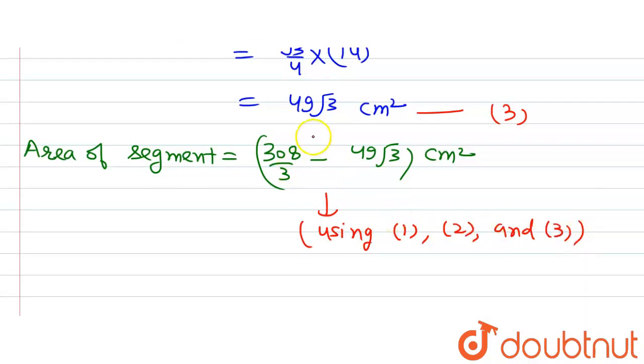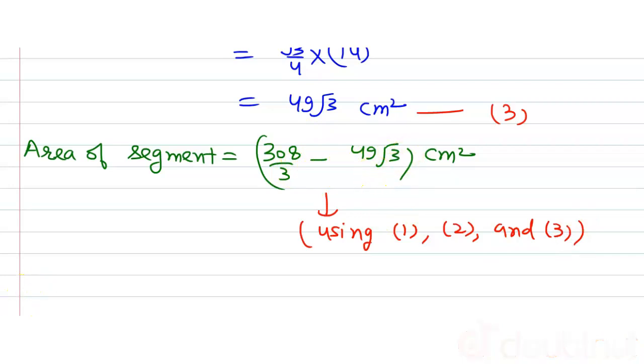So our final answer is 308/3 minus 49√3 centimeters squared. That's all, thank you.